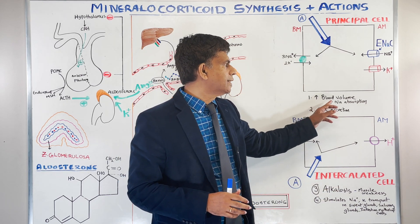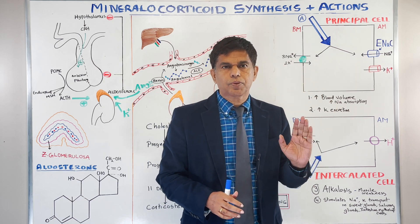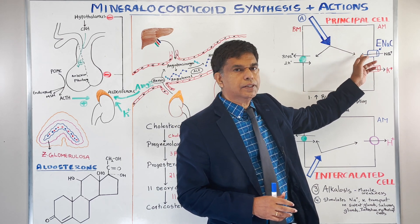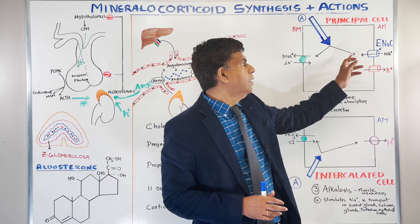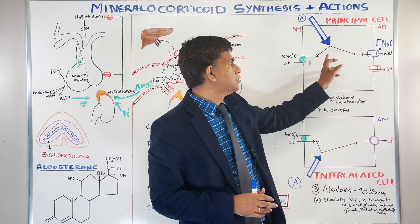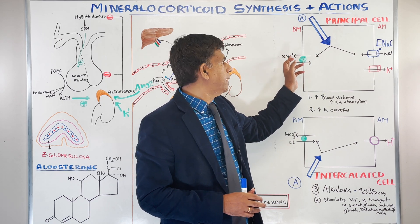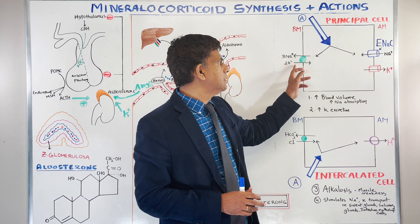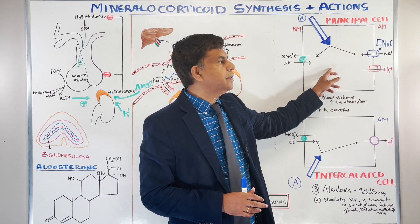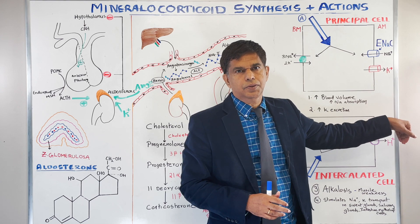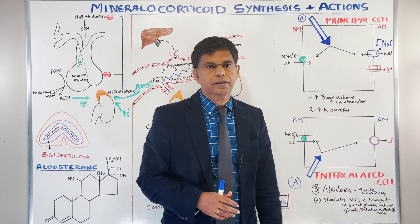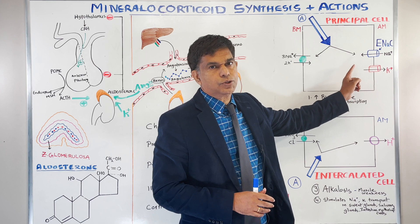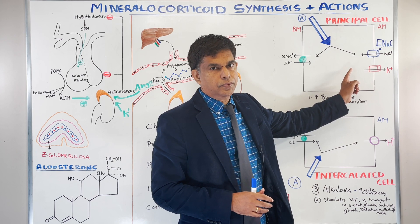Action number one is increased blood volume. Aldosterone promotes sodium reabsorption in the principal cells of the collecting duct. Sodium is absorbed into the cytosol and then pumped out into the blood by the sodium-potassium ATPase pump. As sodium is pumped out, potassium is pumped back into the cytosol, creating a gradient that causes potassium to leak into the urine — resulting in hypokalemia due to increased potassium excretion.